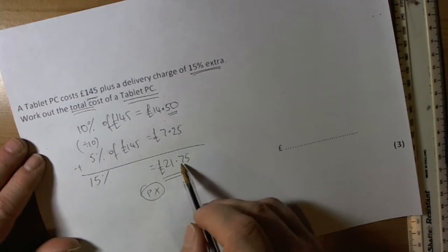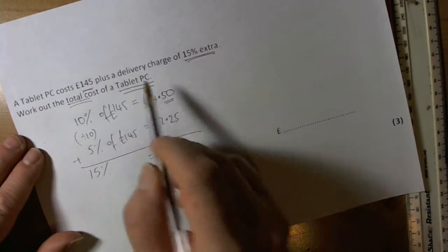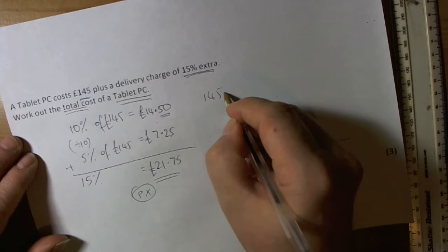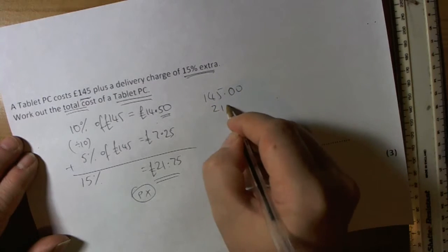Now that's not the answer, remember, because it did say what's the total cost of the tablet PC. So we then need to do £145 plus £21.75.